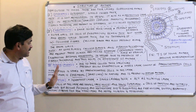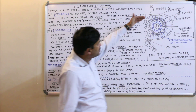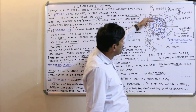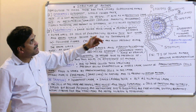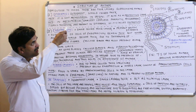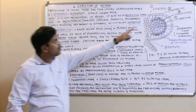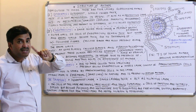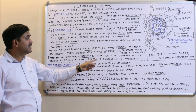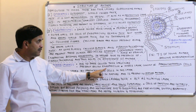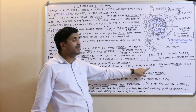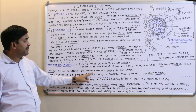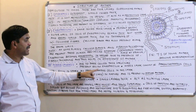The middle layers are present between the endothecium and the tapetum — just below the endothecium and just above the tapetum. Middle layers are one to three cells thick, not single-celled. Middle layers consist of parenchyma cells, and food is stored by these parenchyma cells in this layer.